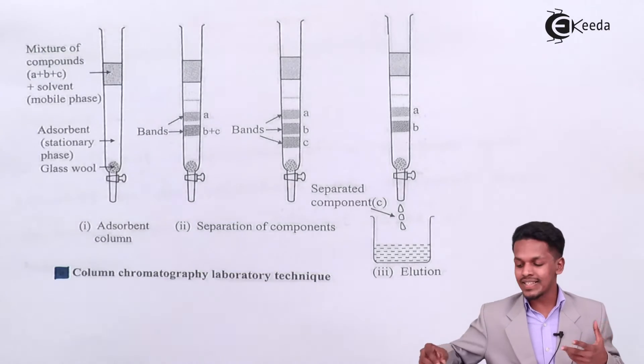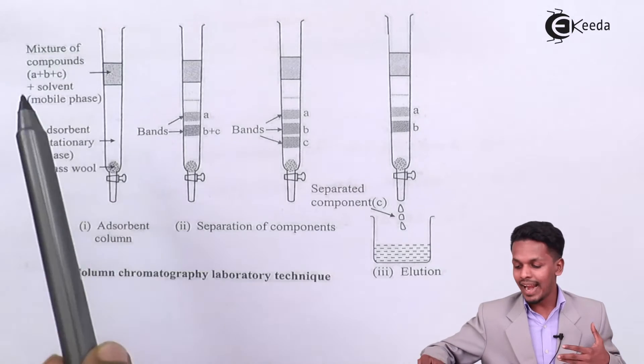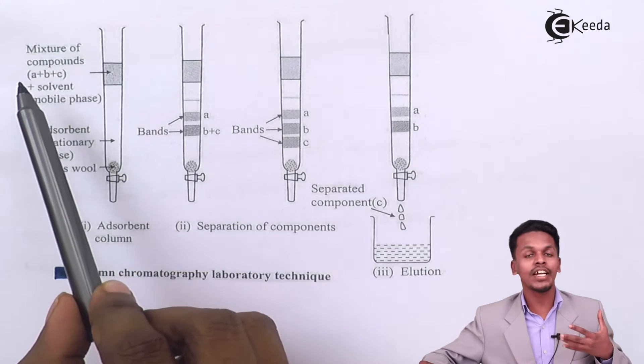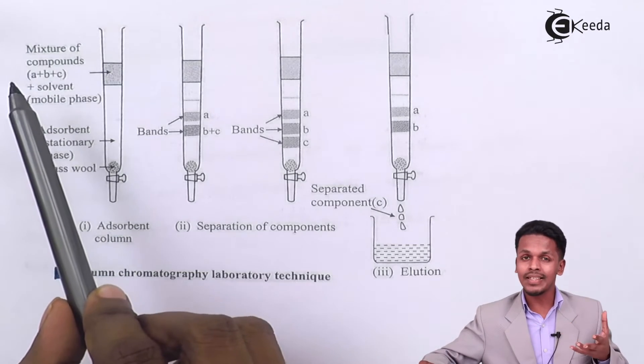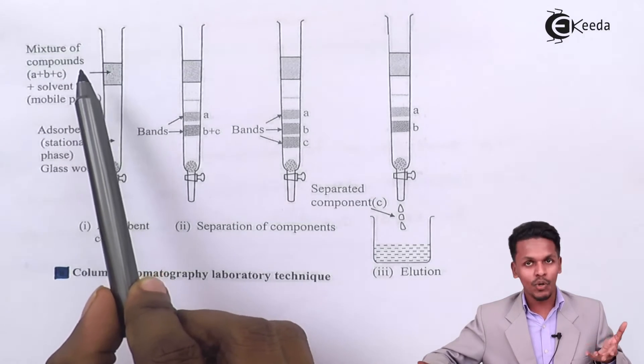So therefore this consists of two phases, and those two phases are the stationary phase, and that is nothing but the adsorbent. And this mixture of compounds, that is A plus B plus C, so in that case it would be a pure component, it could be an impure component also. The thing is there should be a difference between the chemical properties of those, that is pure and impure components.